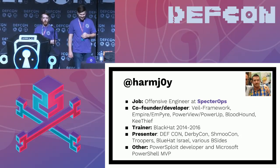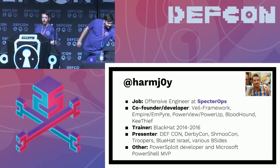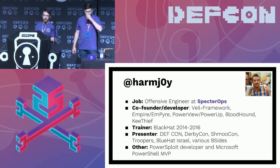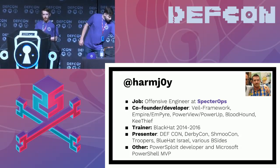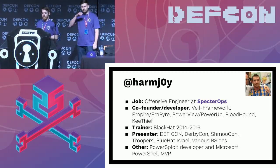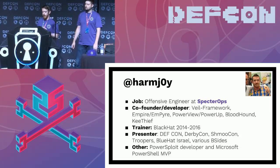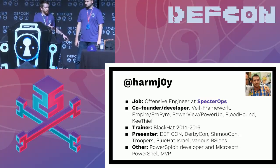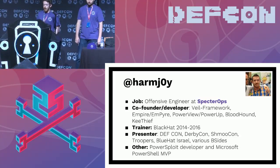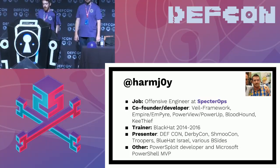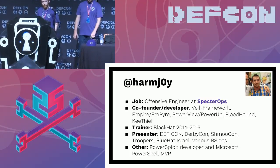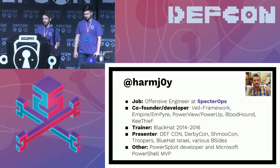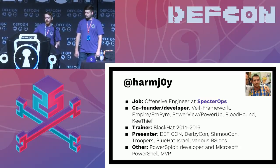My name is Will Schroeder, my handle is harmj0y. I'm an offensive engineer at SpecterOps. I've written a lot of code — I helped write a good chunk of the Veil framework, Empire, PowerView, PowerUp, BloodHound, and KeyThief. I really love Active Directory and this research has been a ton of fun. I'm a PowerSploit developer and a Microsoft PowerShell MVP, so somehow Microsoft doesn't hate me that much.